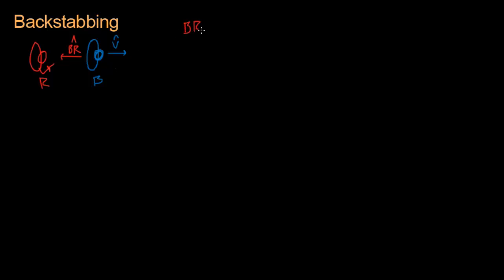So BR — I'm going to write out the whole equation for you just as a review. It is R minus B over the length of R minus B. And that'll get us a unit length vector that points from B to R.